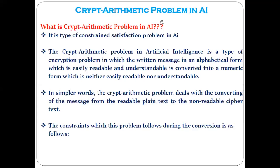Up till now, we have discussed the different ways of solving problems. Currently in this unit, we are discussing about the constraint satisfaction approach to solve the problem. We have already solved different problems like the N-Queens problem, the Sudoku example, the map coloring, and graph coloring problem, which all come under the category of constraint satisfaction problems.